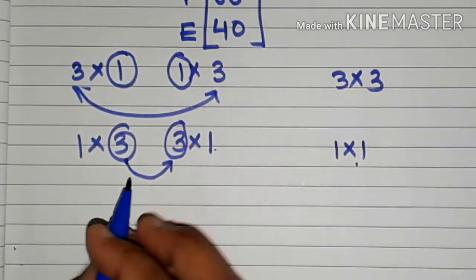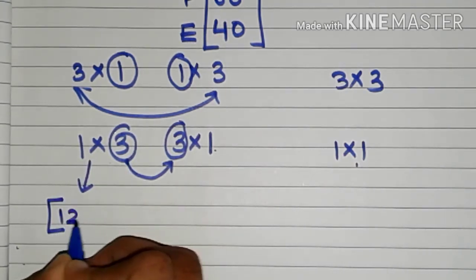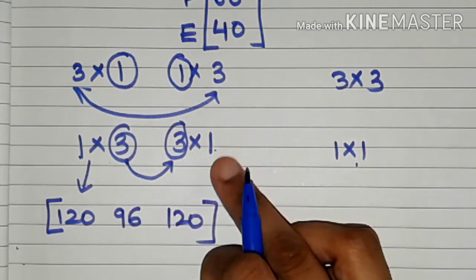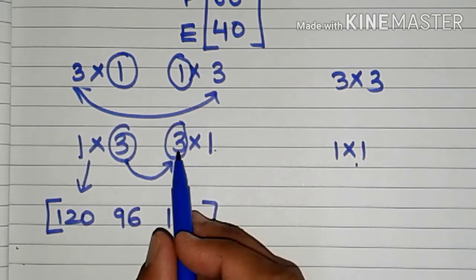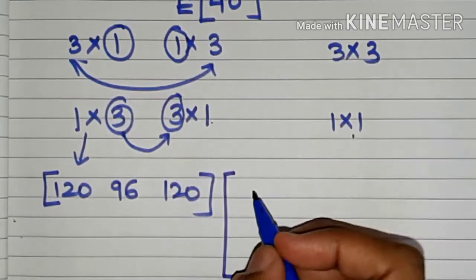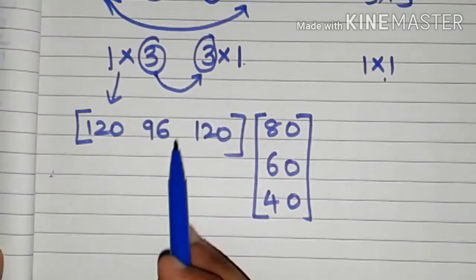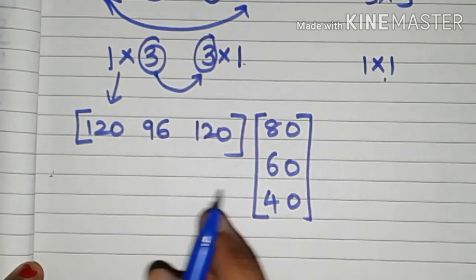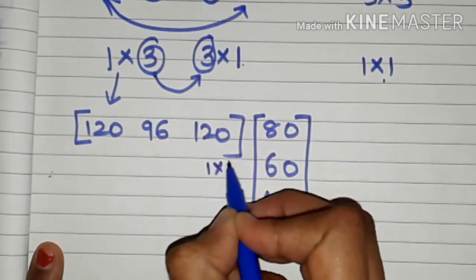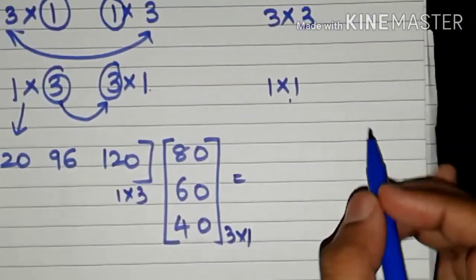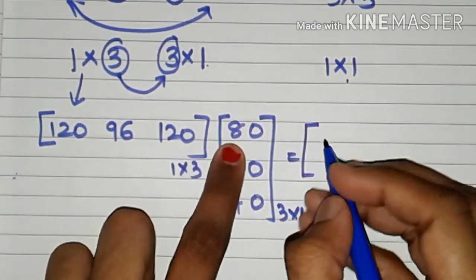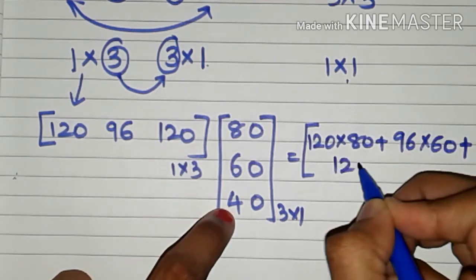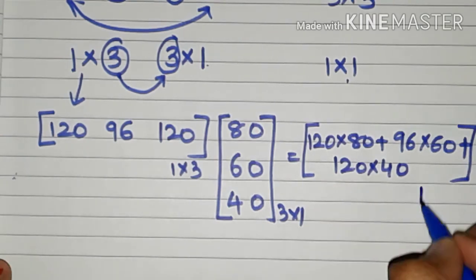Taking the book matrix first: it should be of order 1 by 3, written as [120, 96, 120]. The price matrix should be of order 3 by 1, written as a column: 80, 60, 40. When we multiply these two matrices we get a 1 by 1 matrix. The multiplication gives: 120 times 80 plus 96 times 60 plus 120 times 40. There is only one entry and the order is 1 by 1.